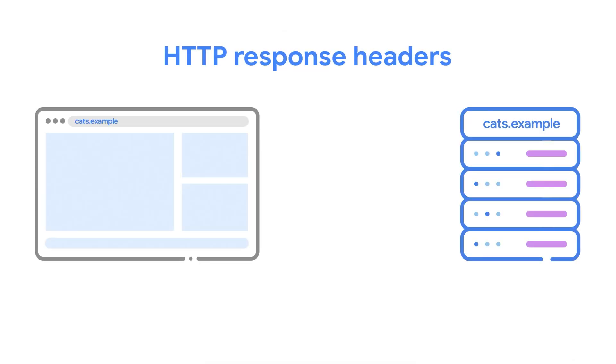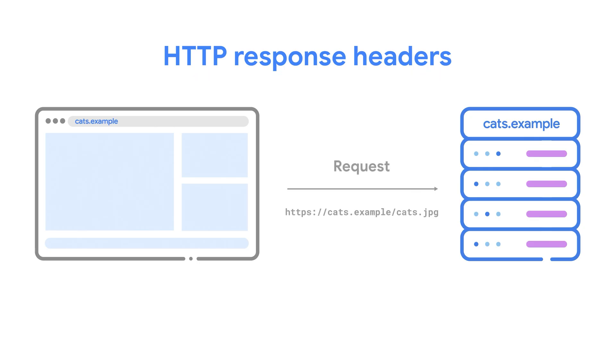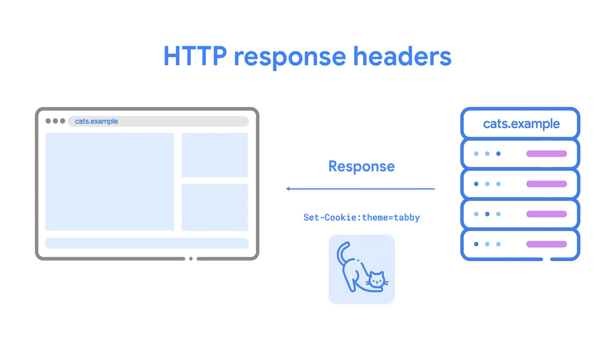When a web server receives a valid request from a browser, the server sends the browser a response that provides the resource that was requested — known as the body. That might be HTML, CSS, JavaScript, an image file, video, or other data. Just as each request from the browser can include request headers, each response from the server can include response headers, sent along with the body. So a response has a header and a body.